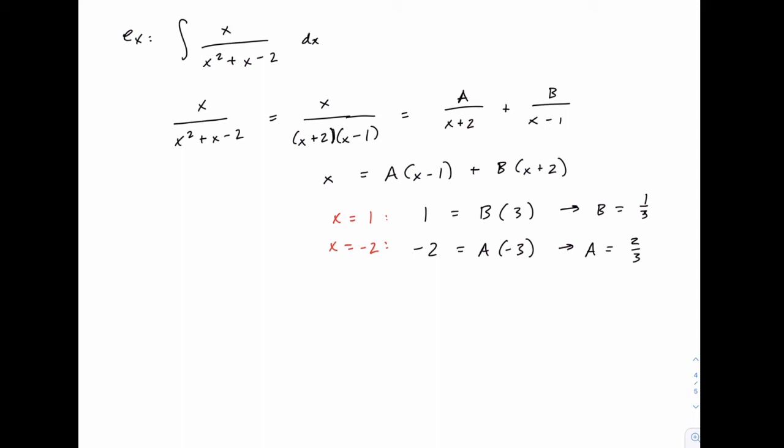So however you choose to do it, whether you do it this way or by equating the powers of x, we've found now that x over x squared plus x minus 2 can be decomposed into a is now 2 thirds over x plus 2 plus b, that's 1 third, over x minus 1.